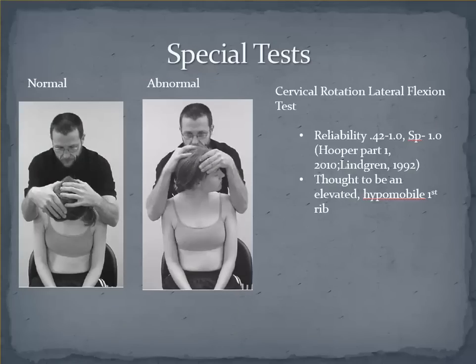The cervical rotation lateral flexion test is probably the most common test used in clinical practice. The thought is that elevation of the first rib restricts the coupling motion at the CT region as the first rib abuts against the transverse process. The side being tested is opposite to the side of rotation. The examiner uses their elbows to stabilize the shoulders, which is a helpful approach as it can be difficult to maintain the rotation of the head and lateral flexion component simultaneously — using two hands really helps to eliminate this problem.